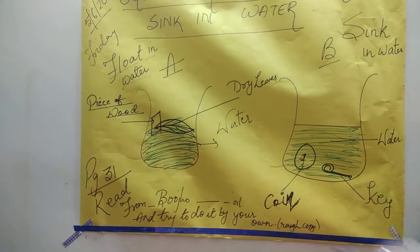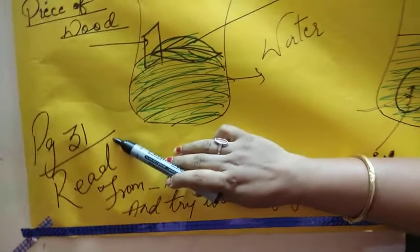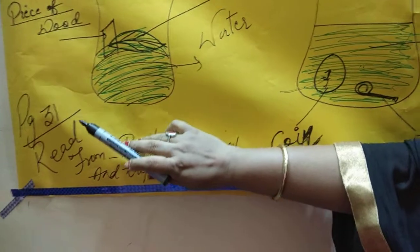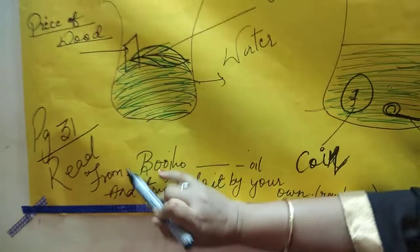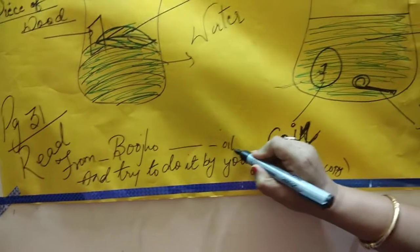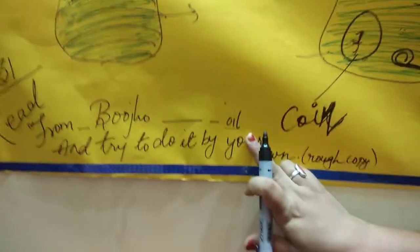Now children, in page number 31 there is a paragraph just above transparency. What is that paragraph I am telling you? The paragraph is from Bujho up to oil. From Bujho to oil you will read that paragraph. Usko padhana hai.